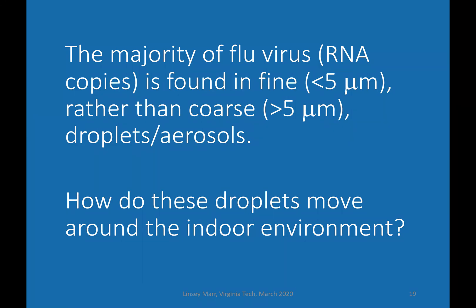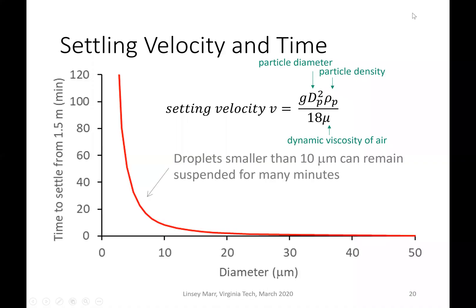Our next question is how do these droplets move around in the indoor environment? One way that they're removed is through settling to the floor or to tabletops or other surfaces. The settling velocity of a particle — we assume a droplet, we assume it's a sphere — is determined by Stokes law. The settling velocity v is equal to the gravitational acceleration g times the particle diameter squared times the particle density, which we can assume is around that of water, one gram per cubic centimeter, divided by 18 times the dynamic viscosity of air.